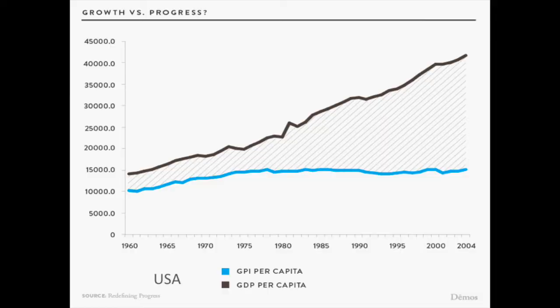A number of countries such as the United States have identified the trend of a widening gap between gross domestic product and genuine progress indicator figures. This suggests economic growth is increasingly being offset by the social and environmental costs of that growth and that true welfare is stagnant or on the decline.